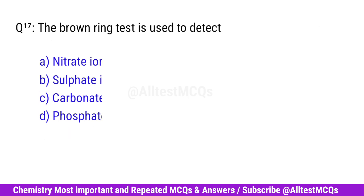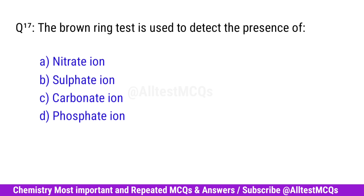Question No. 17. The brown ring test is used to detect the presence of? Right option is A. Nitrate ion.